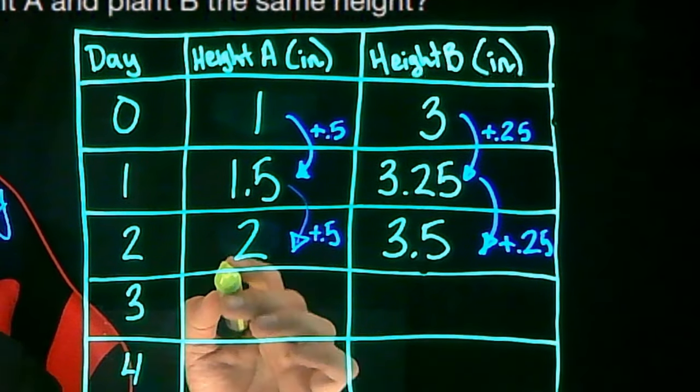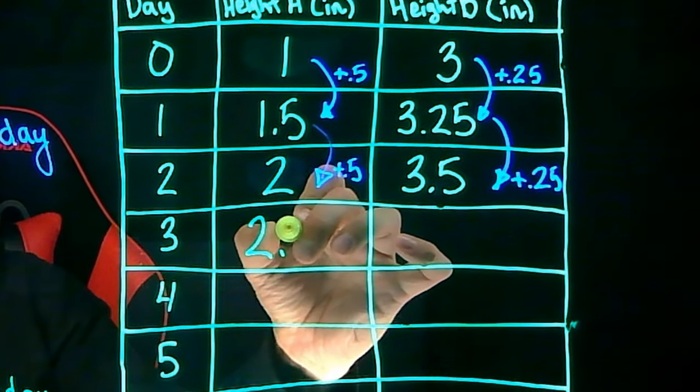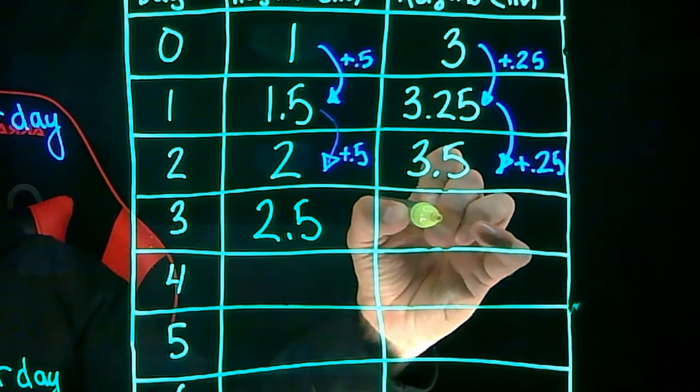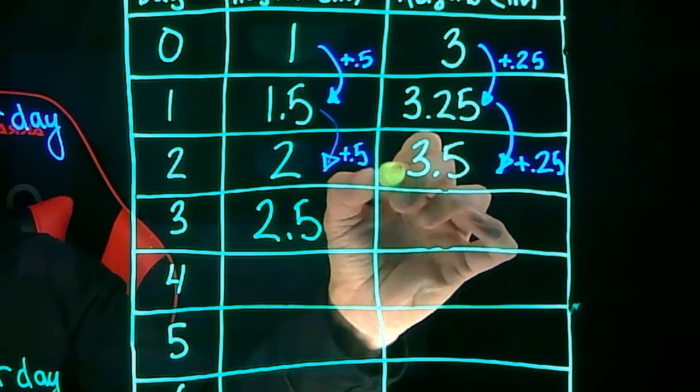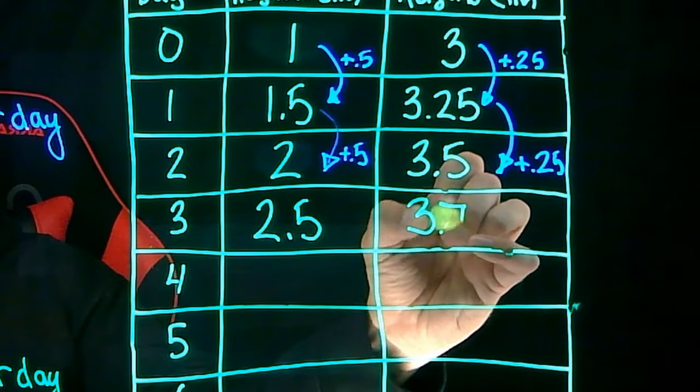On day three, plant A will have a height of 2 plus 0.5 or 2.5 inches. And plant B will have a height of 3.5 plus 0.25 or 3.75.